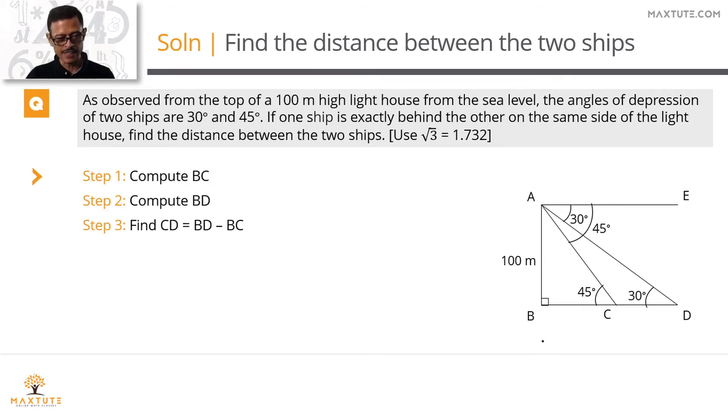Quickly doing all these three steps in printed form. Step one, we find BC by applying tan of angle C, tan 45. Tan 45 is 1, equals AB by BC. AB is 100, so BC equals 100 meters.